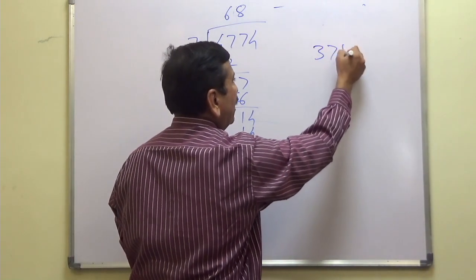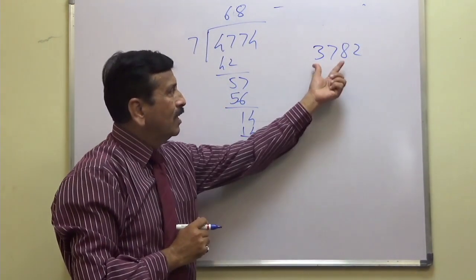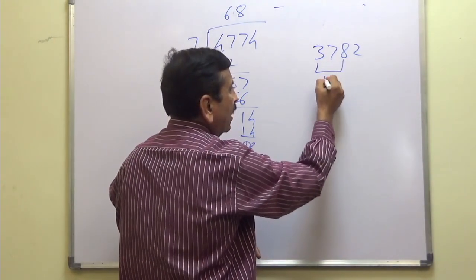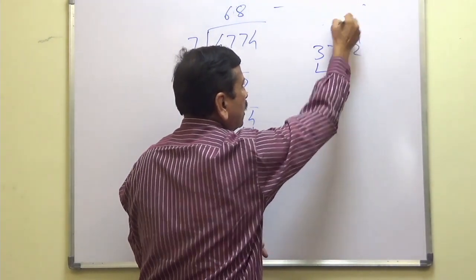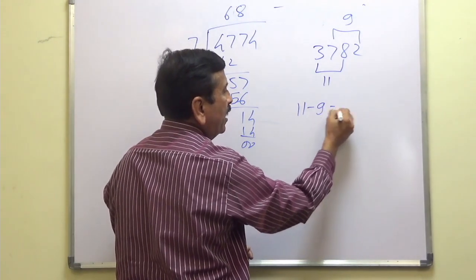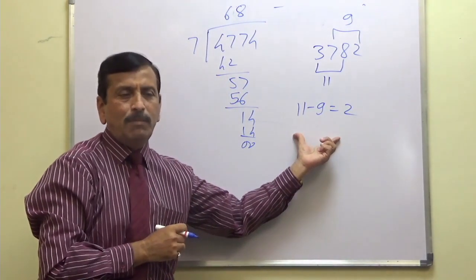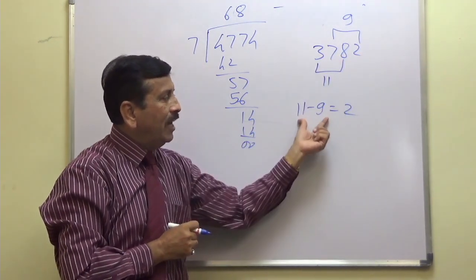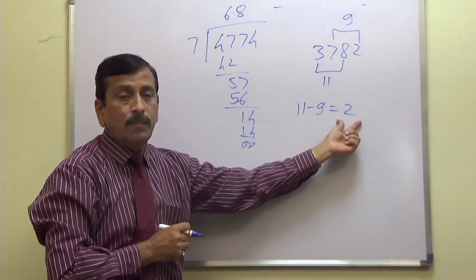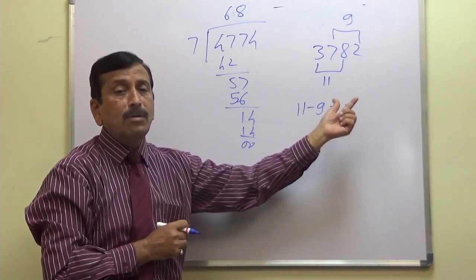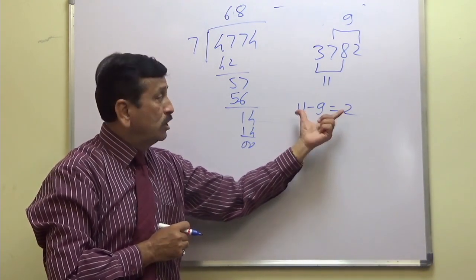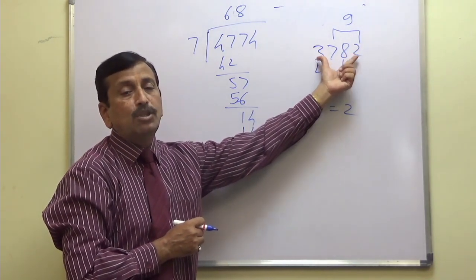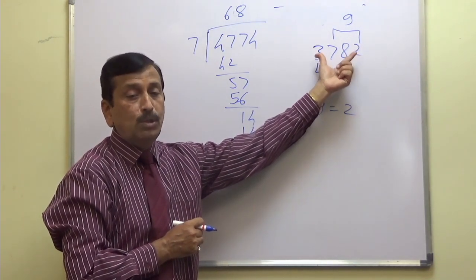Next, the number 3782. For divisibility by 11: 8 plus 3 equals 11, and 7 plus 2 equals 9. So 11 minus 9 equals 2. The difference is 2, which is neither 0 nor divisible by 11. So 3782 is not divisible by 11, and therefore not divisible by 77.